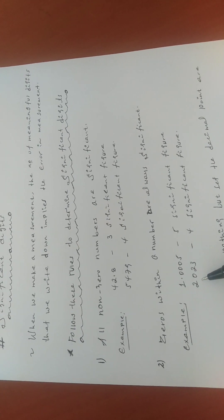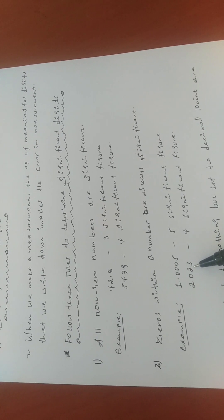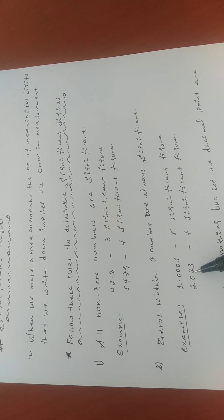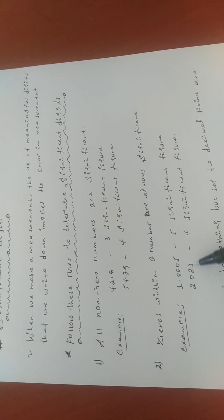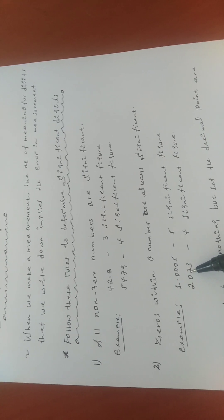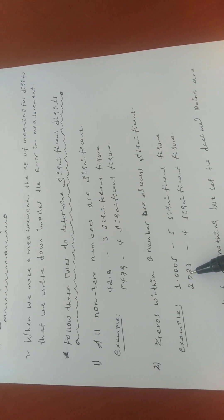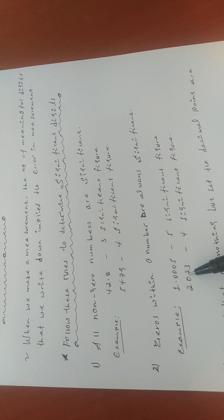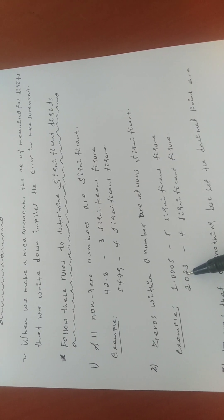For example, 20023: two is non-zero, two is non-zero, three is non-zero, and the zero is between non-zero digits, so it is significant. Therefore, 20023 has four significant figures.